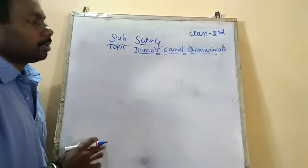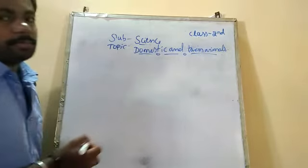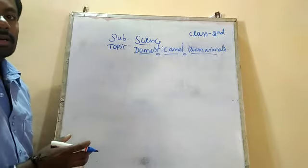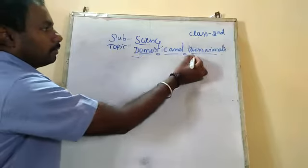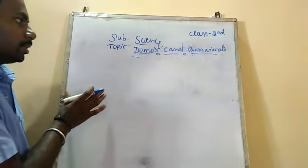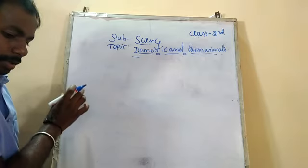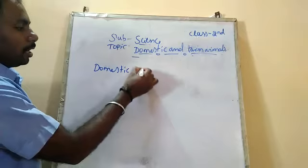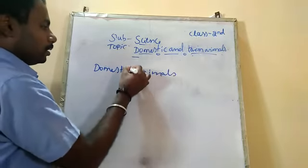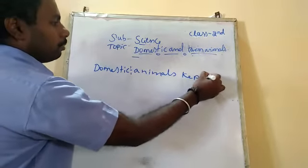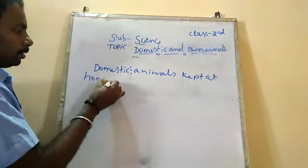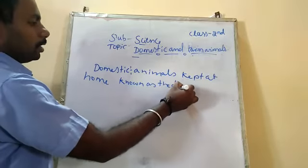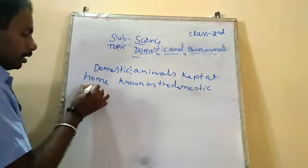After the revision, this is Unit 3: Domestic and Farm Animals. We will see that there are so many kinds of animals. The domestic animals means the animals that are kept at home — they are known as the domestic animals.